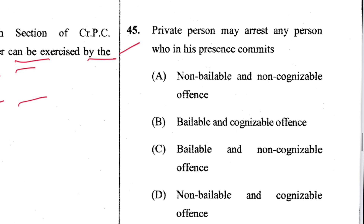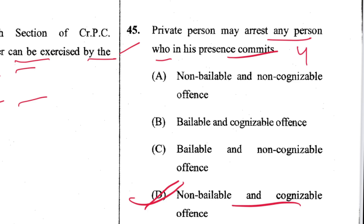Question 45: A private person may arrest any person who in his presence commits a non-bailable and cognizable offence. D is the answer. The provision is Section 43 of CrPC.